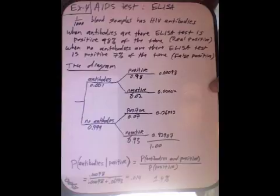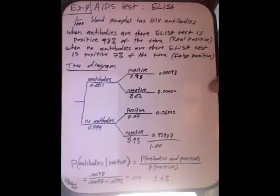And then we also assume that when there are no antibodies — meaning the blood came from a person who is not HIV positive — the test still gives a positive 7% of the time. This is called a false positive. The person doesn't have HIV, and yet the test is saying that they do. So the best way to set this situation up is to use a tree diagram like the one you see here. 99.9% of the time there are no antibodies in the blood, and a tenth of a percent of the time, .001, there are.